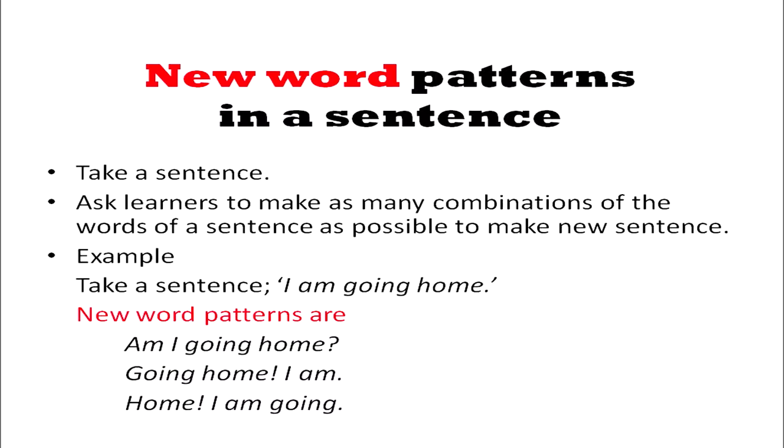This way, learners will be more observant and will be able to see much more than they are doing right now. Another game is forming new word patterns in a sentence, which lays the foundation for divergent thinking. Suppose there is a sentence: 'I am going home.' New patterns can be: 'Am I going home?', 'Going home?', 'I am home.', 'I am going.' These different patterns open up the mind to realize that 'I am going home' is not the only construction possible. Several other constructions can be formed, which is quite helpful when writing poems or in different circumstances.